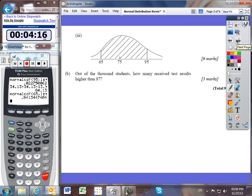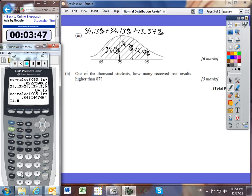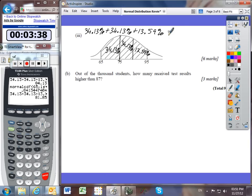Now we're looking for in between 65 and 95. Well, we could use the method of adding together the different percentages. I know that this one's 34.13, 34.13, and 13.59. So if we added those together, 34.13 plus 34.13 plus 13.59 gives you a total of 81.85%.